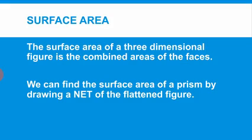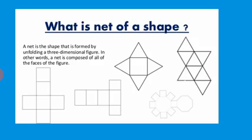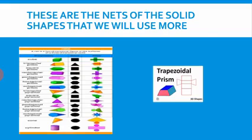We have also said that the surface area of a three-dimensional figure is the combined areas of its faces. We open the solid shape and calculate the area of each face. We can find the surface area of a prism by drawing a net — the shape formed by unfolding a three-dimensional figure. In other words, a net is composed of all the faces of the figure.